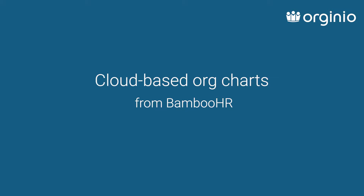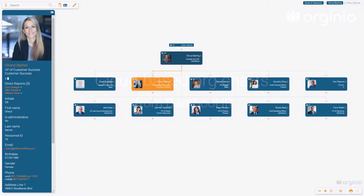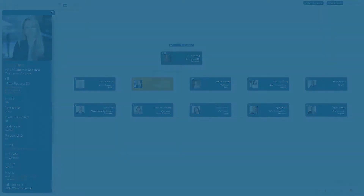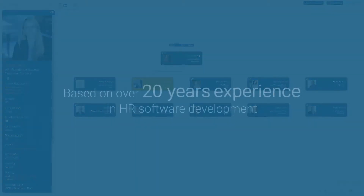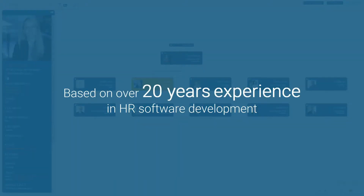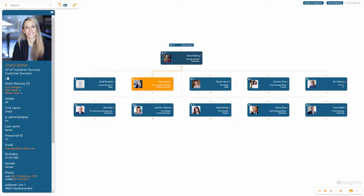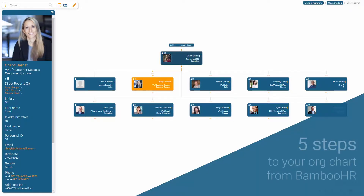Orginio is a cloud-based app for organizational charting, based upon 20 years of experience in HR software development. Synchronize your data from BambooHR, and your org chart will automatically be created.